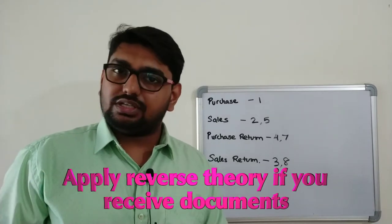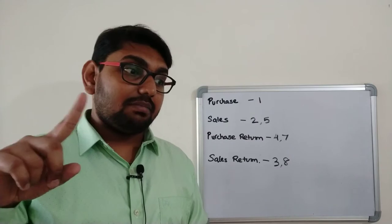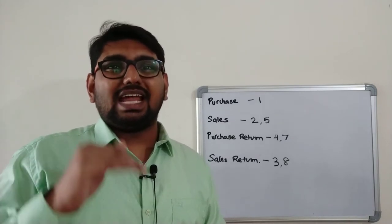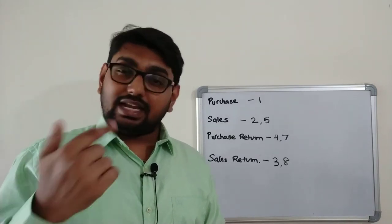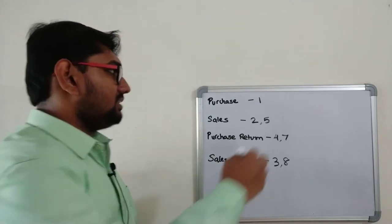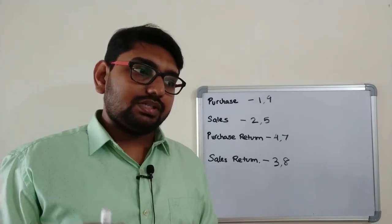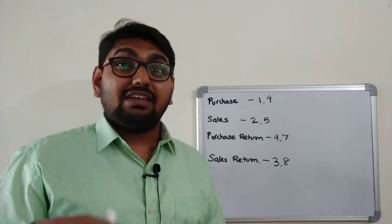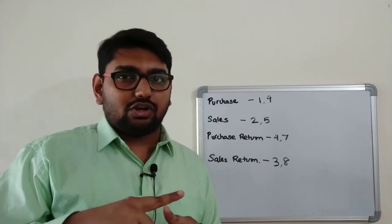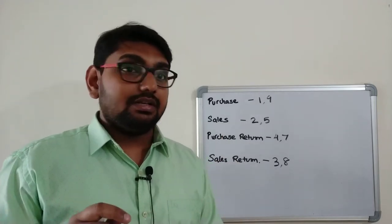Ninth transaction: Bruce executed our order placed on December 18. Bruce is sending the goods to us, so I am purchasing the goods — it is a purchase transaction. Tenth transaction: received a credit note from Bruce for goods worth rupees 2,000. Am I giving or receiving? Receiving. So apply opposite logic — normally a credit note means sales return, but in reverse logic it is purchase return. The tenth entry is therefore a purchase return transaction.